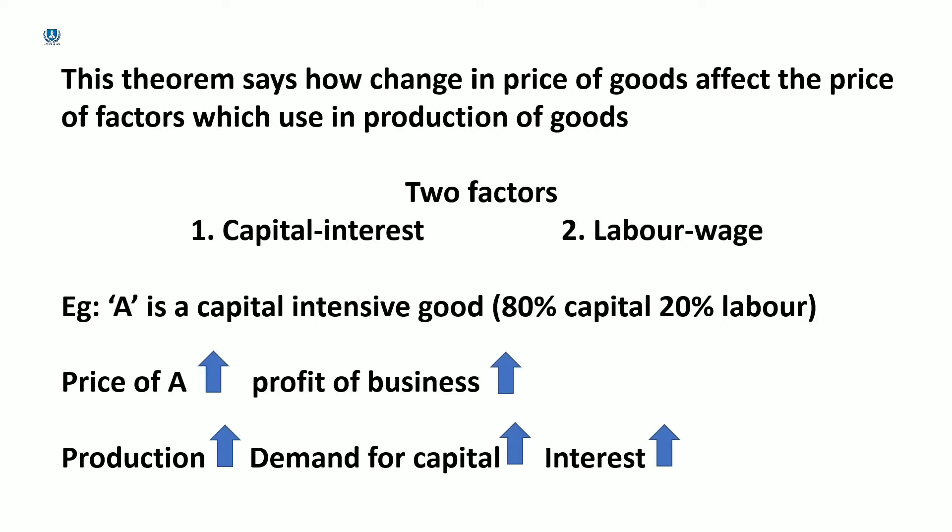In this video, we have two factors coming from labor and capital. If you take the same goods as a factor of production at wage, this relationship shows that this theory says how a change in price of goods affects the price of factors which are used in production of goods.